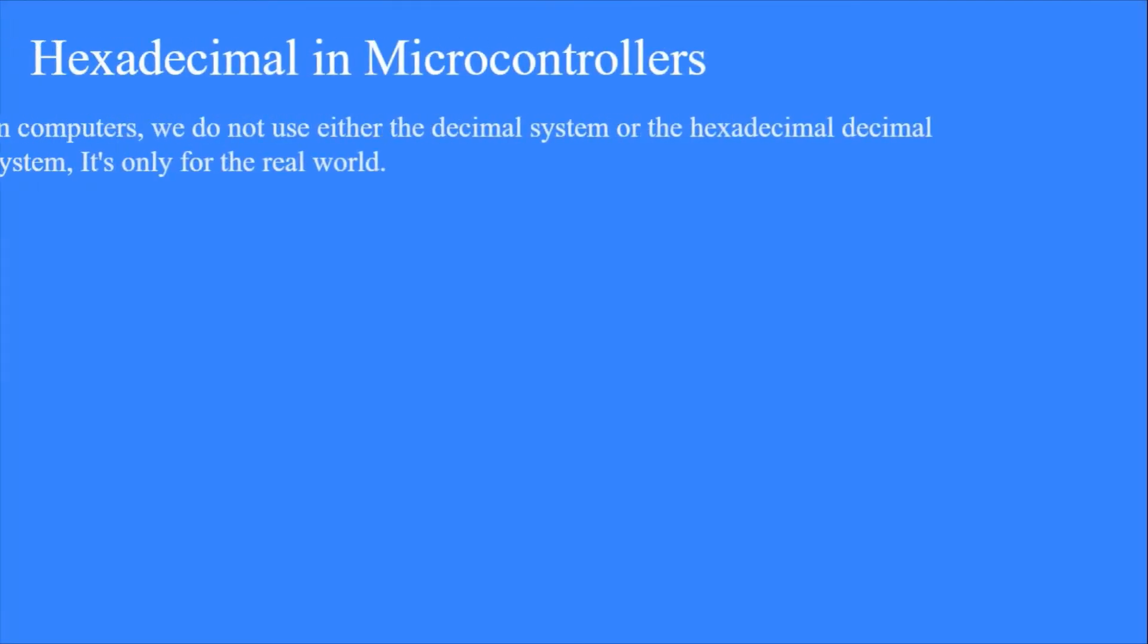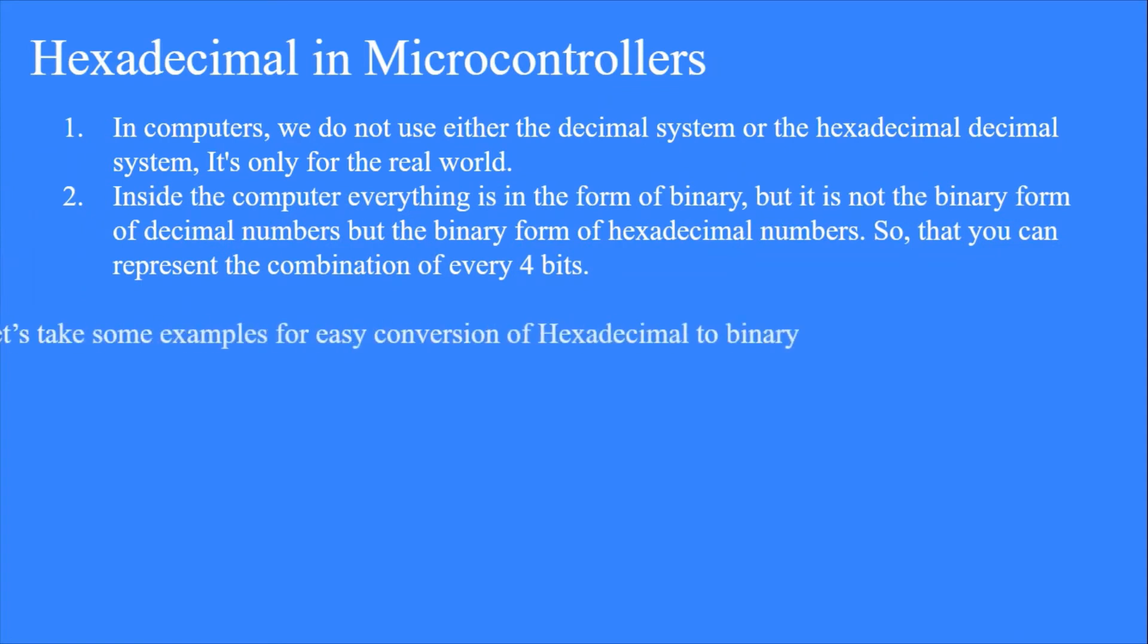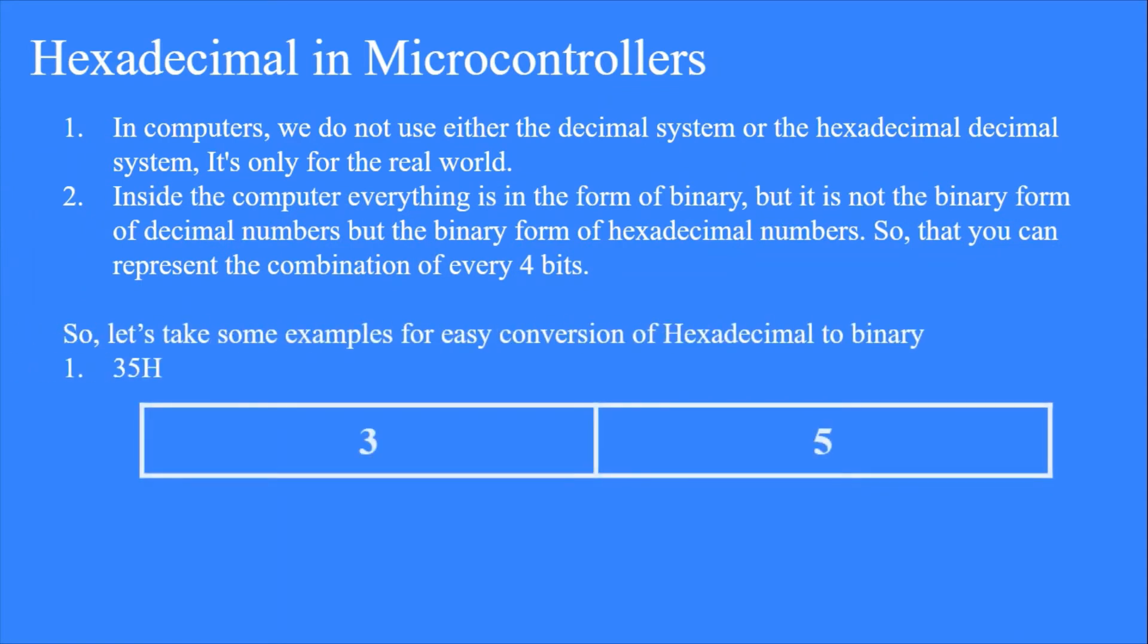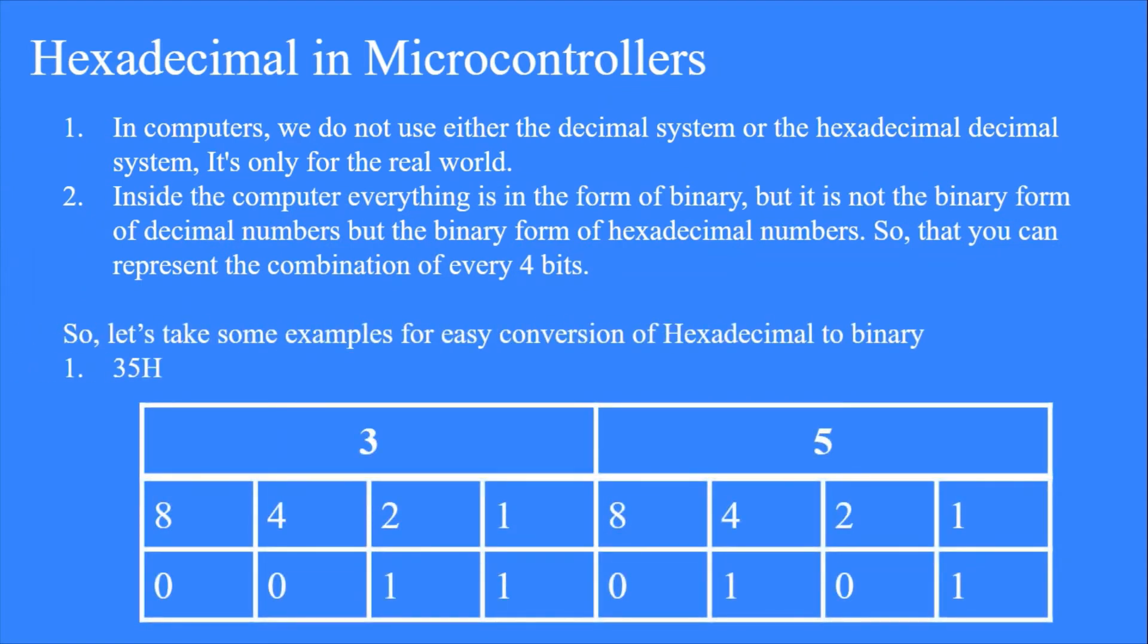In computers, we do not use neither the decimal number system or the hexadecimal number system. It is only for the real world. Inside the computer, everything is in the form of binary, but it is not in the binary form of decimal numbers, but it is in the binary form of hexadecimal numbers, so that you can represent the combination of every 4 bits.